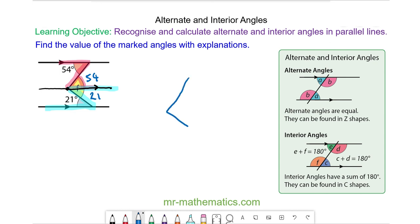So angle F is made up of a 54 and a 21 degree angle. So angle F is 75 degrees.